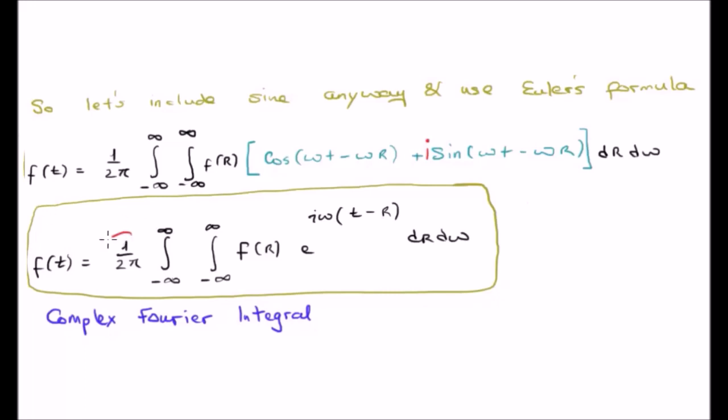Finally, what we're left with is the following expression. We start with a function of t, small f of t, that's equivalent to having 1 over 2 pi the double infinite integral, and we have our input function again but this time we use a dummy variable R. We multiply it by e to the i omega t minus R, and we integrate it dR d omega.